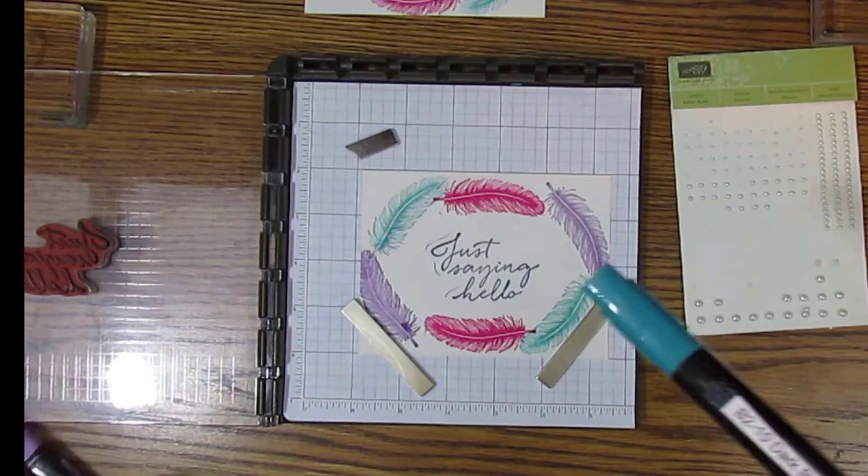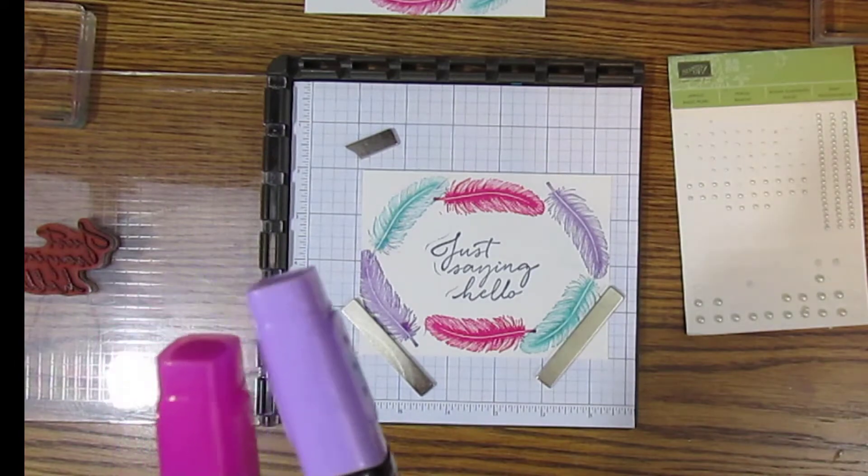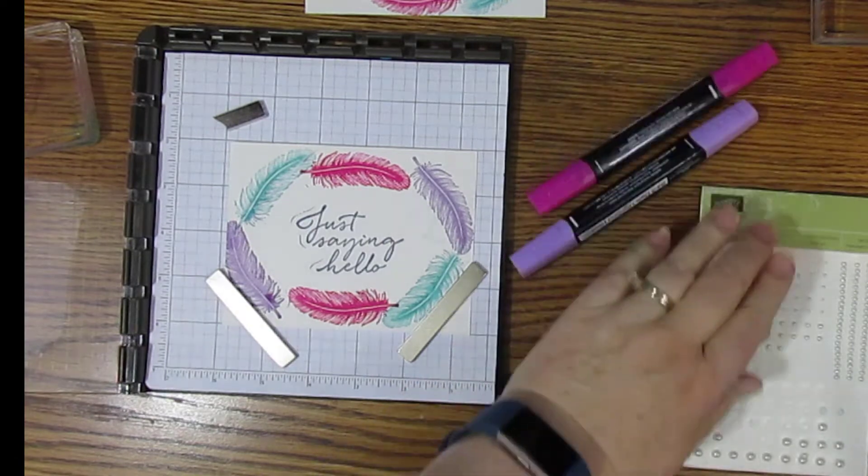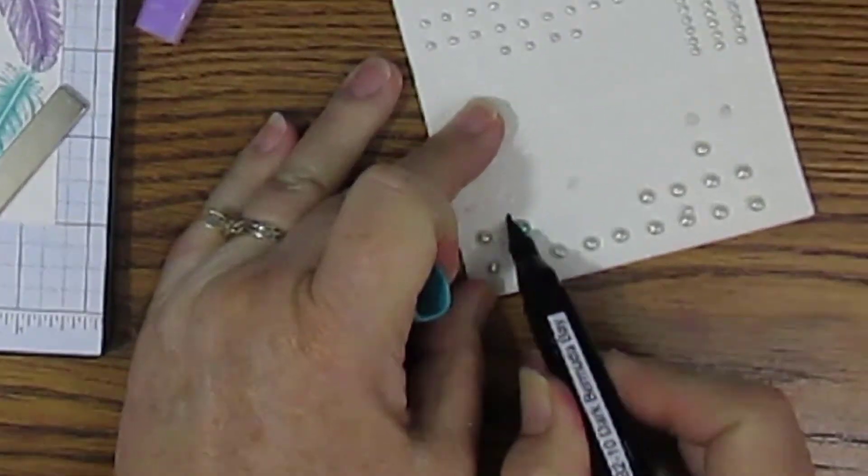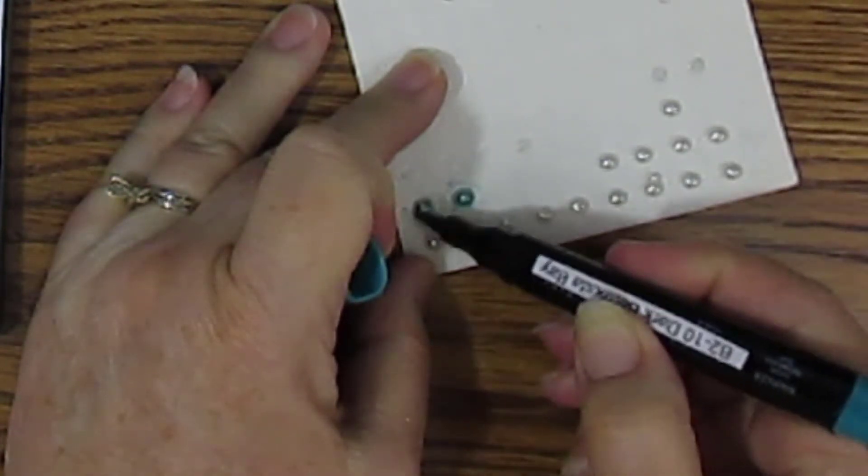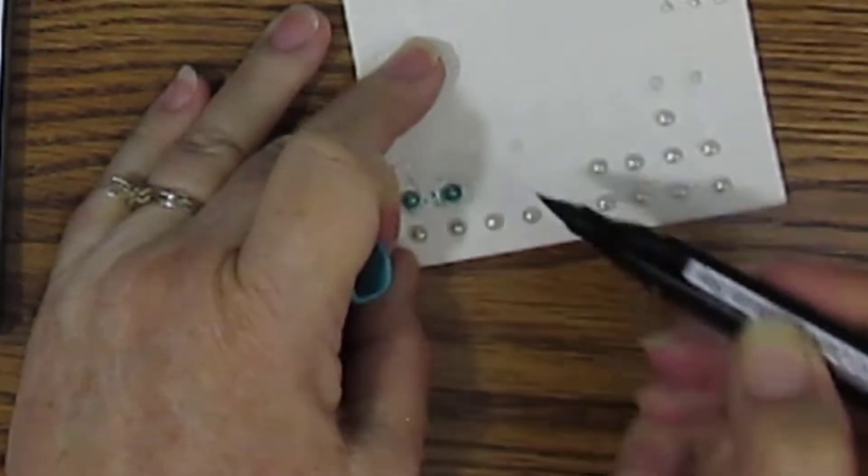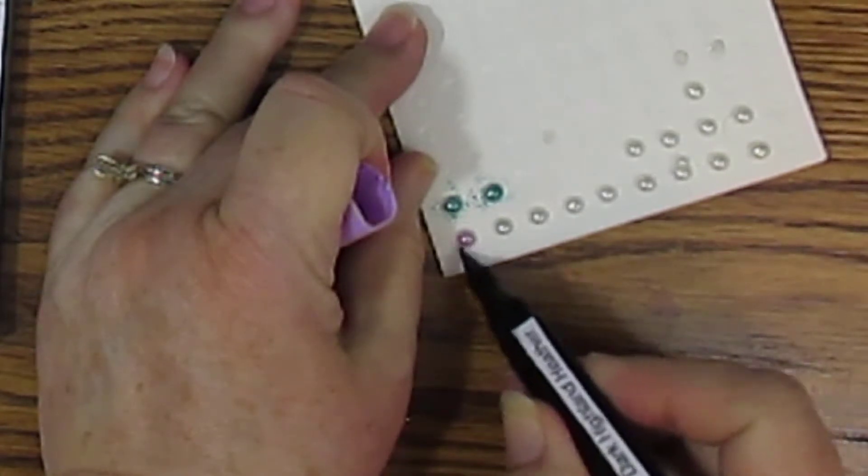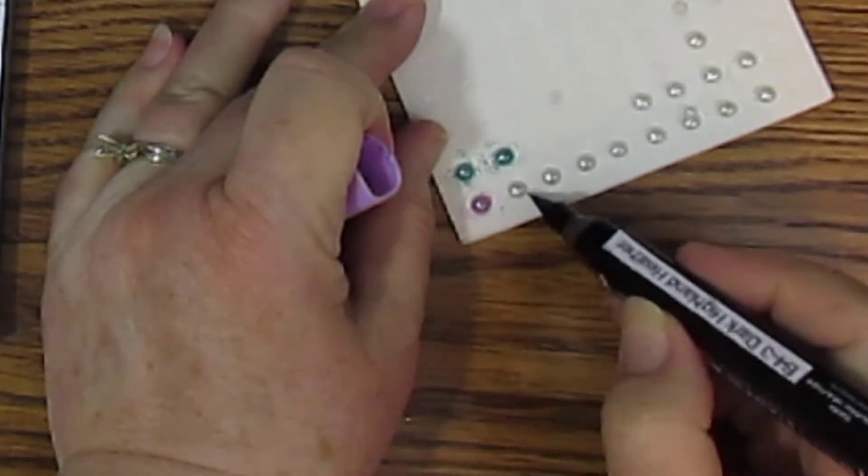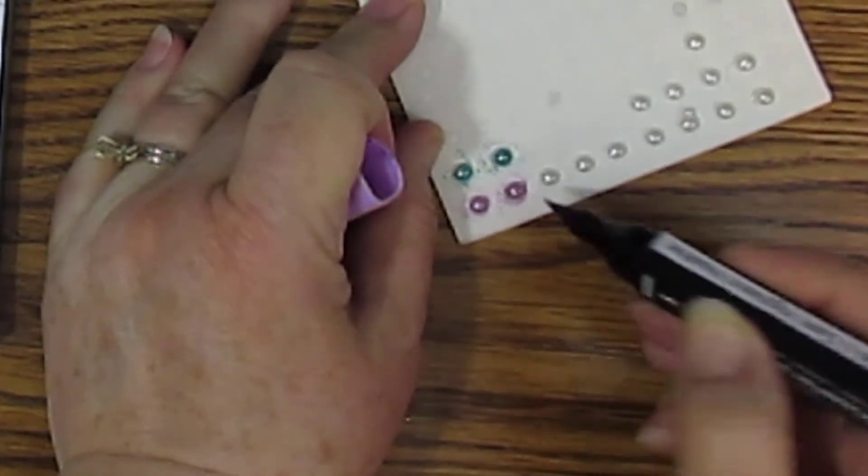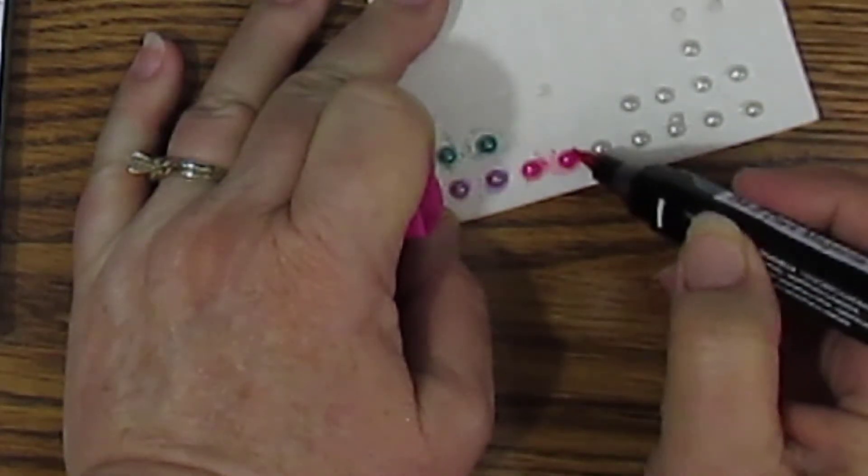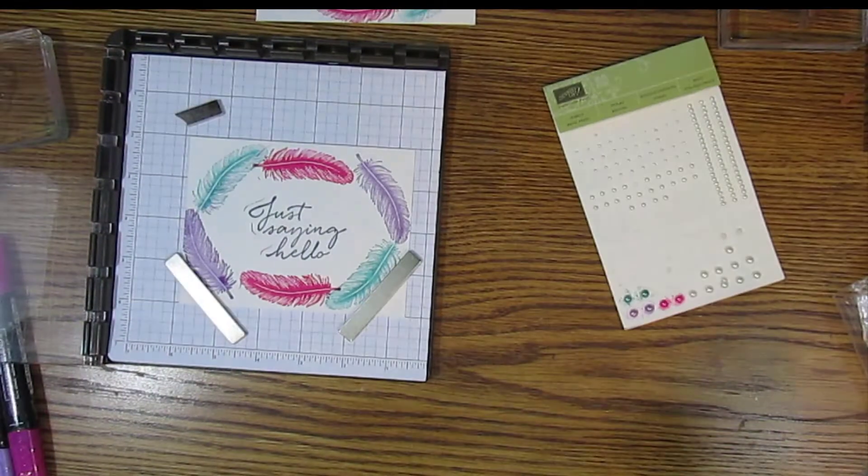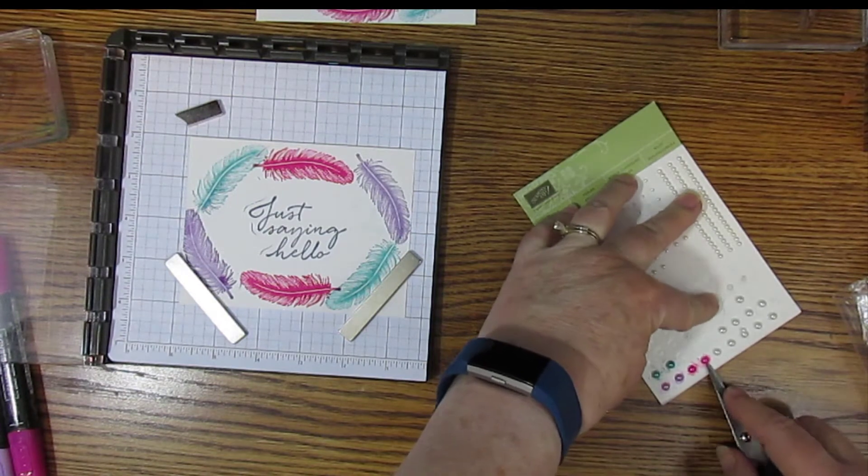Okay, we're going to color them with the dark Bermuda Bay blends, dark Highland Heather and dark Magenta Madness. I guess this is a really old one but we'll use it anyway. And I'm using the brush tip as opposed to the fine tip. We're going to color them a little bit. I think we'll do this one first.